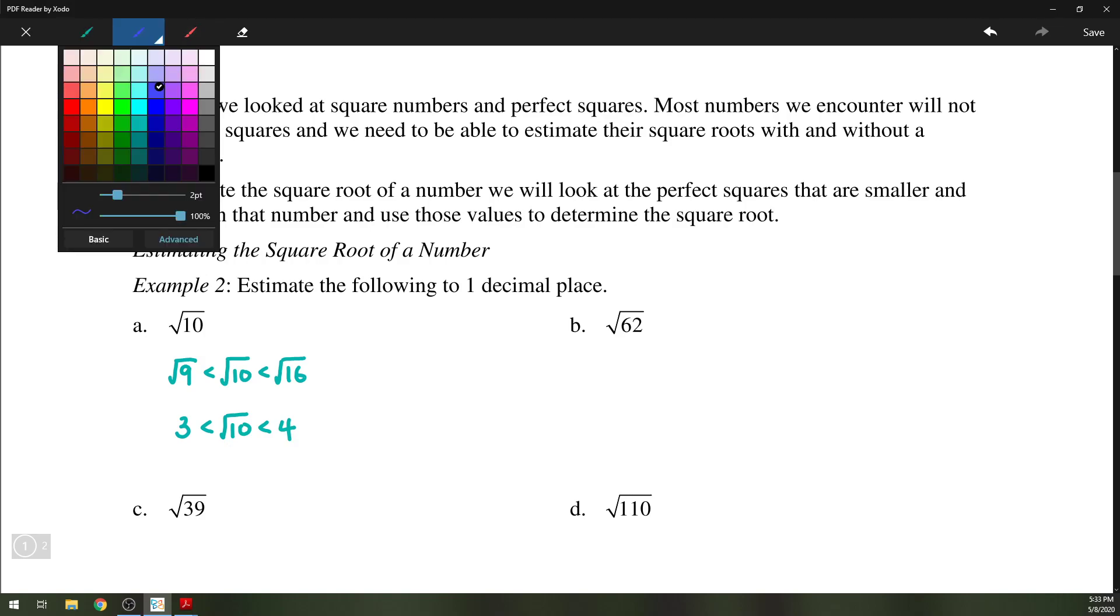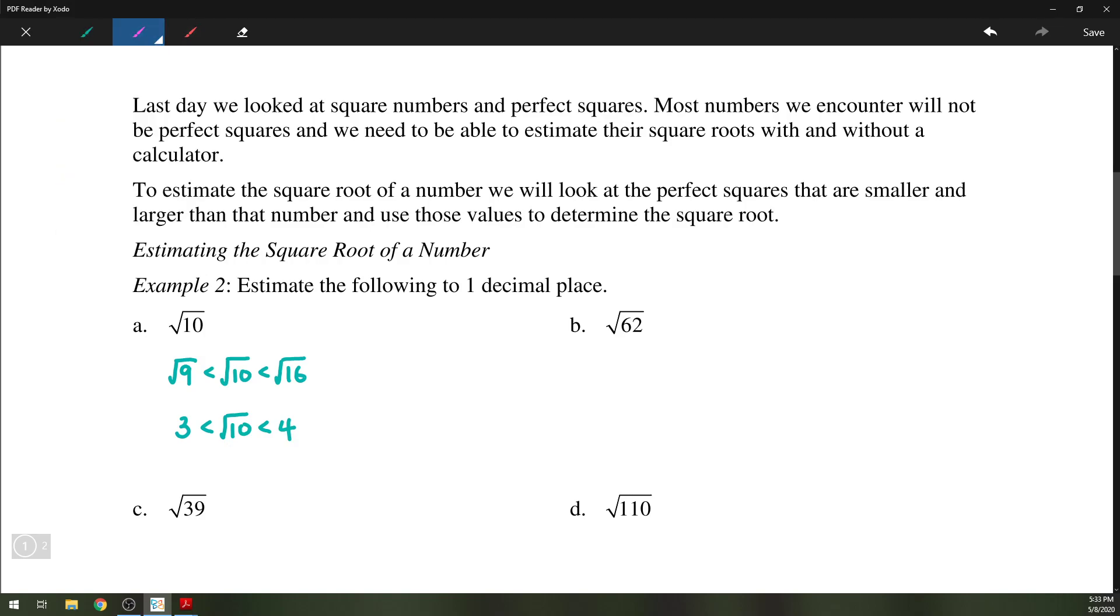Now if we look at how far 10 is from each number, we can see that it's 1 away from 9 and 6 away from 16. So it's going to be closer to 3. A reasonable estimate would be that the square root of 10 is close to 3.2. This of course means approximately equal to, because we estimated.